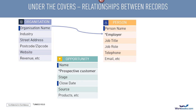When we think about an opportunity record, it's a record that's used to capture information about prospective sales. So it includes information about who the prospective customer is, what stage of the sales process or the sales cycle that you've reached, when the deal is likely to close, and the kinds of products and services that you're selling. The prospective customer field, like the employer field on a person record, is a linked field, which can be populated with an organisation name if you sell into businesses, or with a person name if you sell direct to individual people. Notice there are two fields on the opportunity record that are mandatory: the name of the opportunity and also the close date.